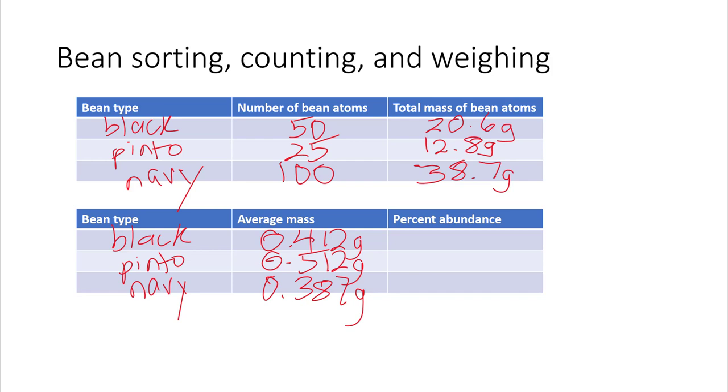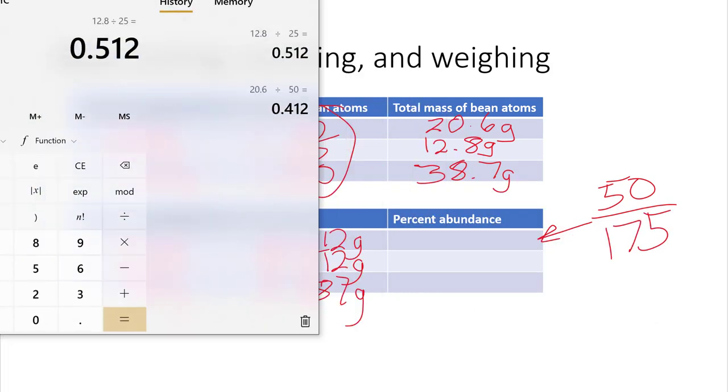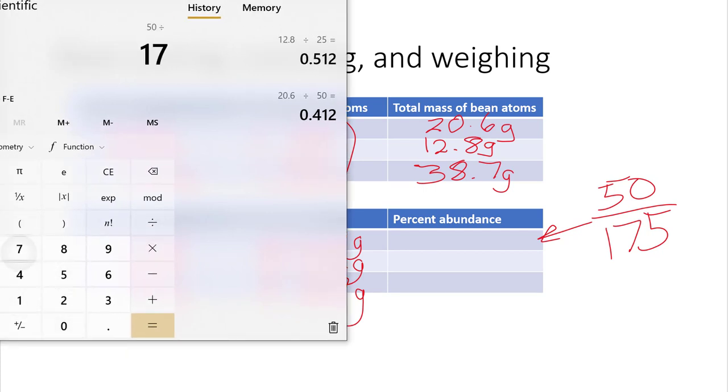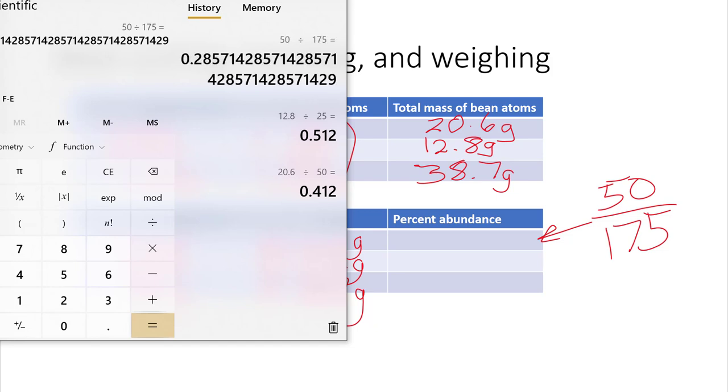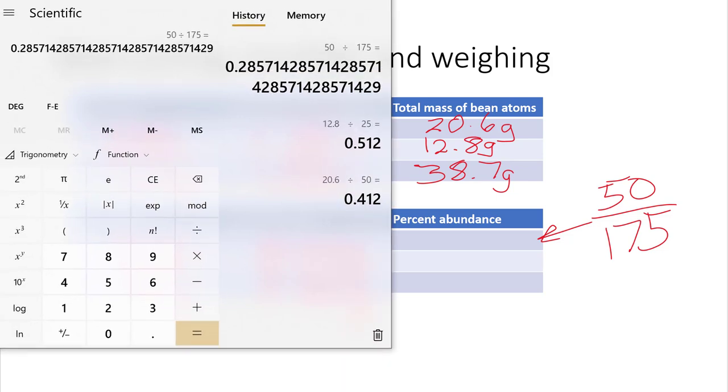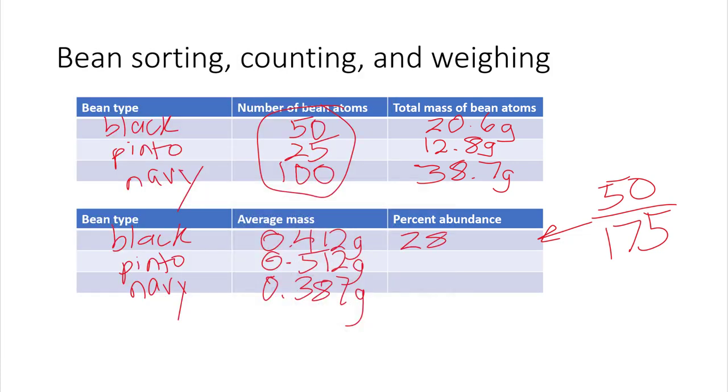And now I have to calculate the percent abundance. So the way you calculate percent abundance is to take the number of each bean and divide by the total beans. So in this case, for the black beans, you would take 50, which is the number of black beans you had, and then divide by the total number of beans. So you would add all these numbers together. And in that case, it would be 175. So you do 50 divided by 175, and you would get the percentage by multiplying that by 100. So it would be 28.57%.